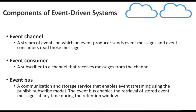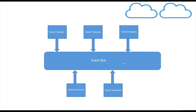Next we have event consumer. A subscriber to a channel that receives messages from the channel is nothing but an event consumer. The event consumer will receive the event messages and perform further actions. Next, we have event bus. An event bus is a communication channel and a storage service that enables streaming of events using the publisher-subscriber model. The event bus also enables retrieval of stored event messages during the retention window — there is a retention window till which that event will be present in the event bus. In the architecture of the publisher-subscriber model, we have an event bus along with event producers and event consumers. Event producers create an event, event consumers listen to the event, and those events are passed inside a channel through the event bus.